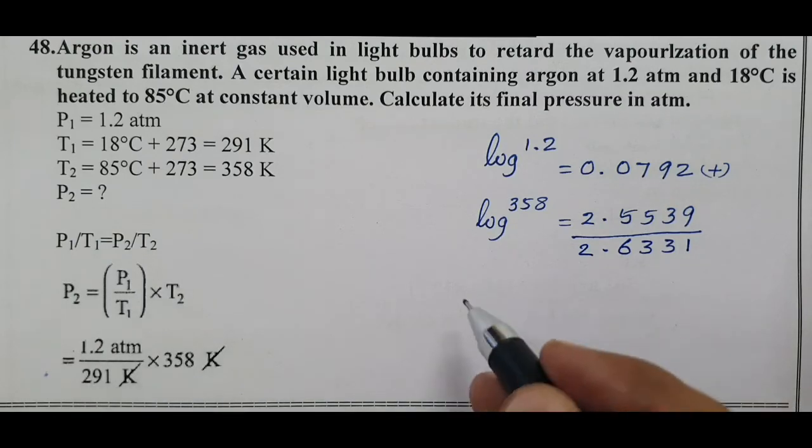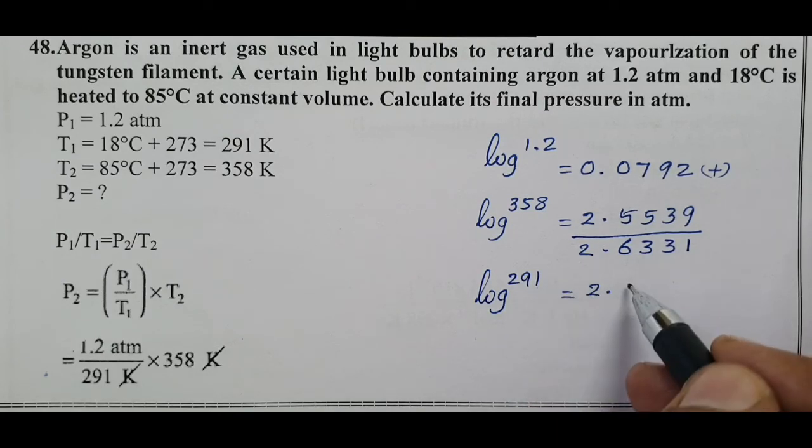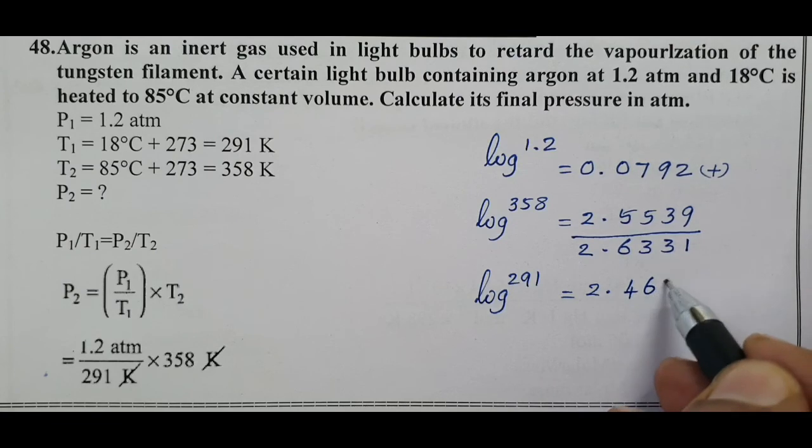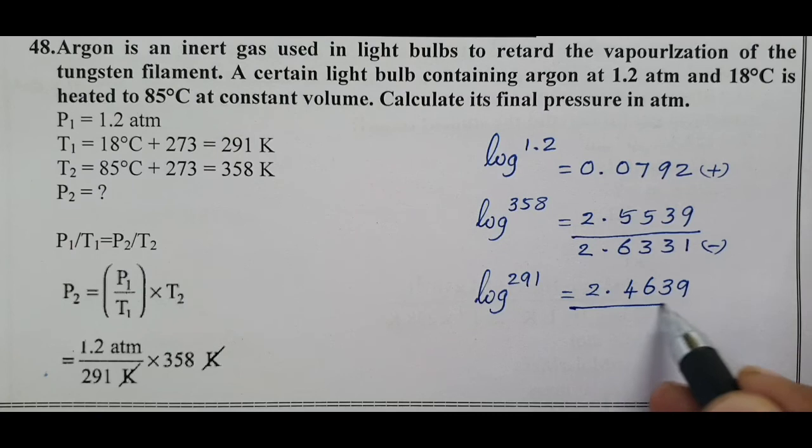Now for the denominator, the temperature value log 291, that is equal to 2.4639.